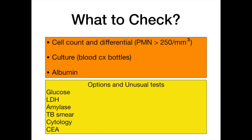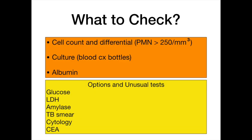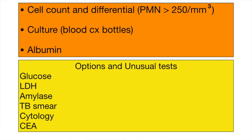When you pull off the ascites, what do you want to check? The basics are a cell count and differential — keeping in mind that SBP is diagnosed when PMNs are greater than 250. You also want to send it for culture, infusing blood culture bottles, and for albumin. Second-tier or unusual tests include glucose, LDH, amylase, tuberculosis testing, cytology, and CEA.